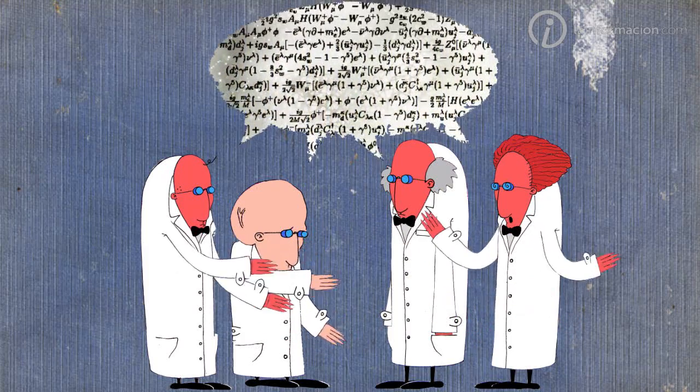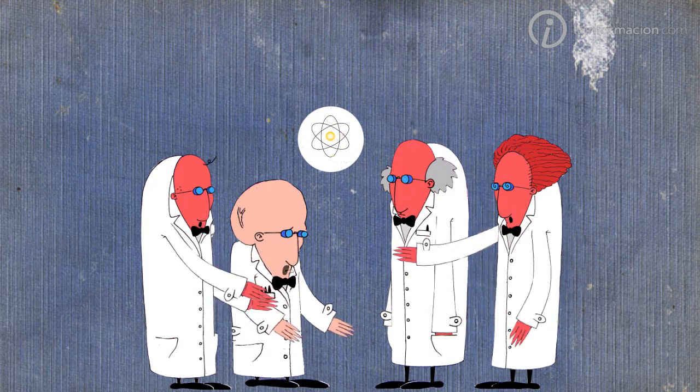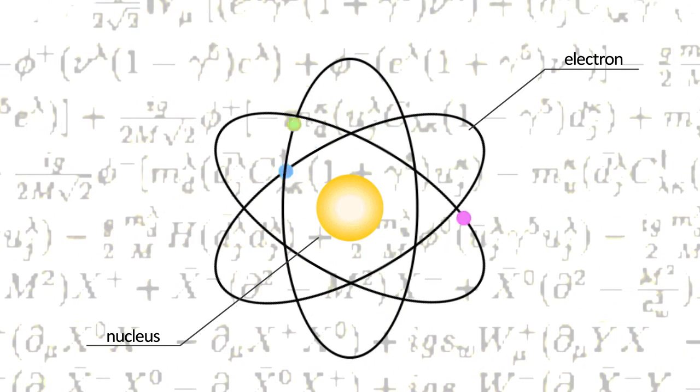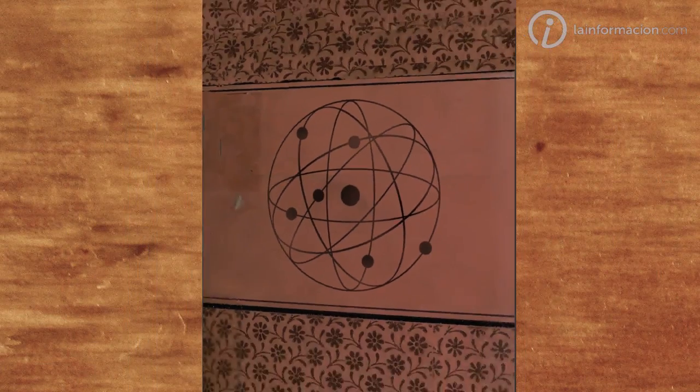After discovering the atom and its core, they went further to find the particles the atom is made of. That's how they unraveled the laws of quantum mechanics. At the same time, they slowly drew the map of fundamental forces.